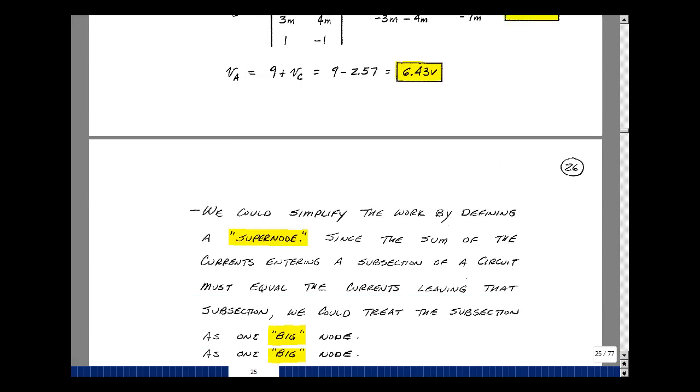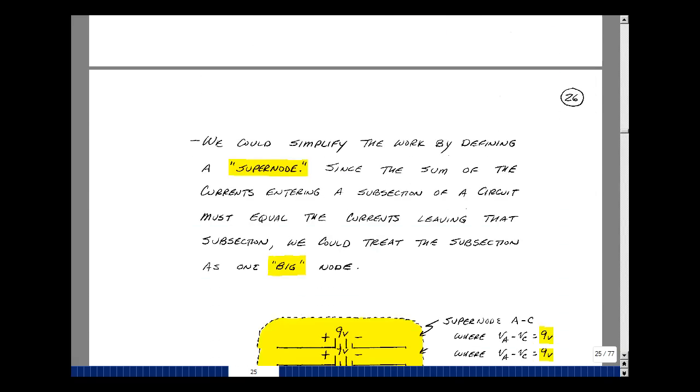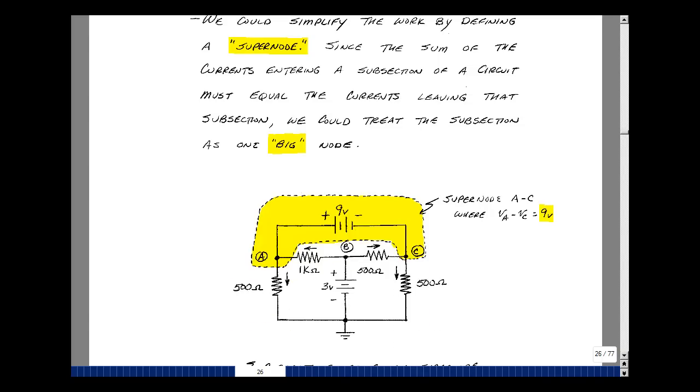It's called the super node method. What I'm going to do is create one really big node. The current that enters a circuit has to leave a circuit. So if you think of this as a piece of a circuit, whatever enters this would have to leave it.